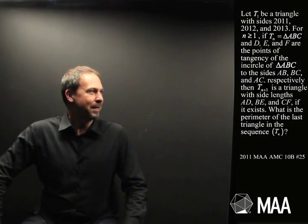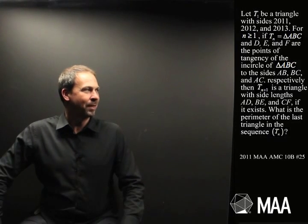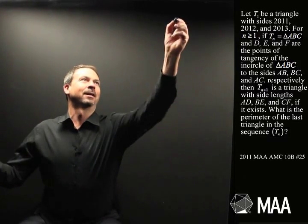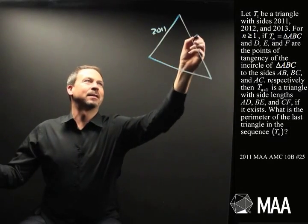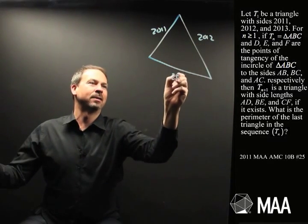It goes as follows. Let T1 be a triangle with sides 2011, 2012, 2013. So you can do that. Triangle, big sides, 2011, 2012, 2013.